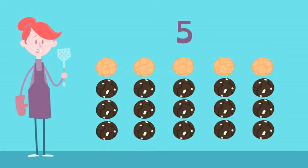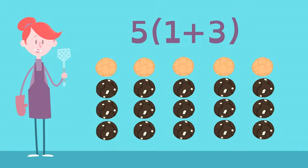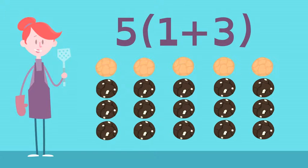Lucy makes 5 groups of 1 lemon and 3 chocolate cookies and distributes them equally among her 5 friends. This expression shows the arrangement of cookies.